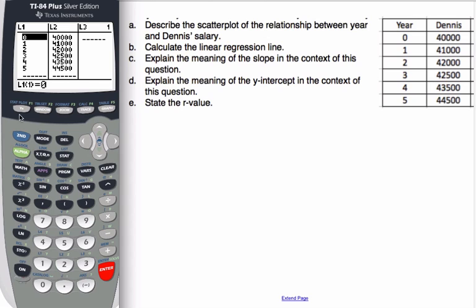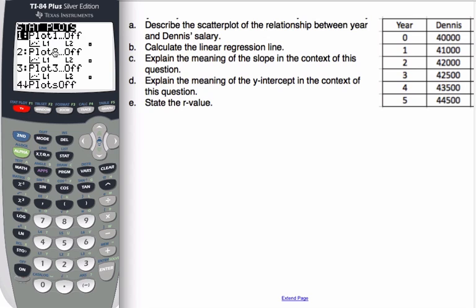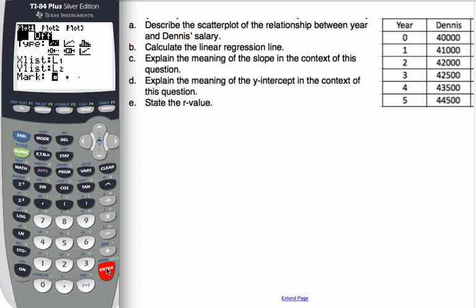I want to see the scatterplot, so I go 2nd, y equals, which is my statplot. I'm going to hit enter on the first one. I'm going to turn it on, and I want this particular one highlighted. I want my x list in L1, so this is my independent variable, and the salary is my dependent variable.